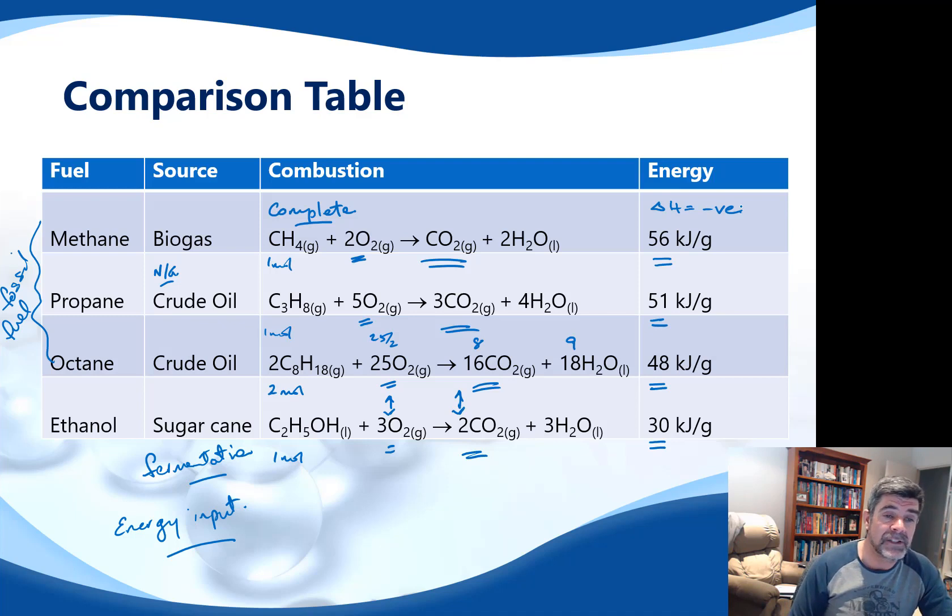You can now see that methane produces the greatest amount of energy per gram. And while the difference between octane and ethanol is not insignificant, certainly the ratios are nowhere near as high as they are for the ratios of oxygen required and carbon dioxide released.